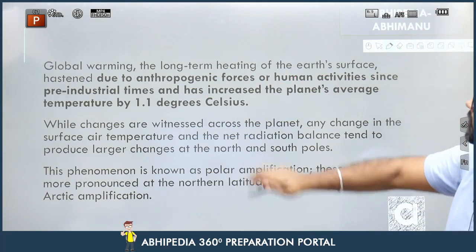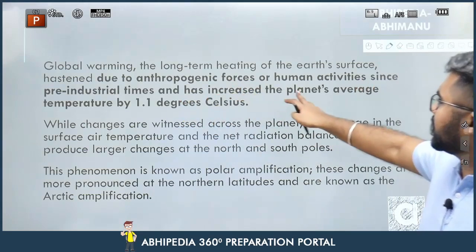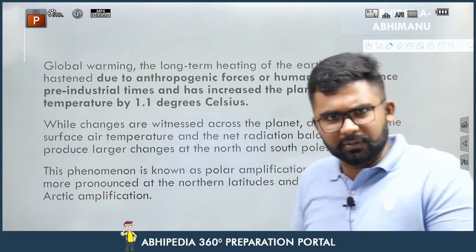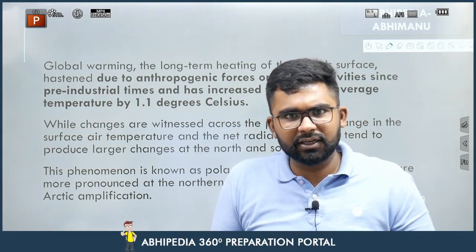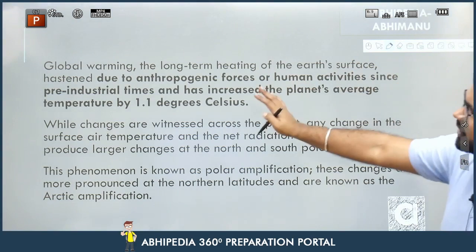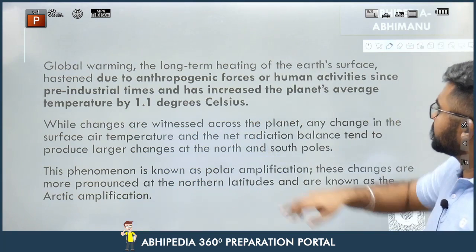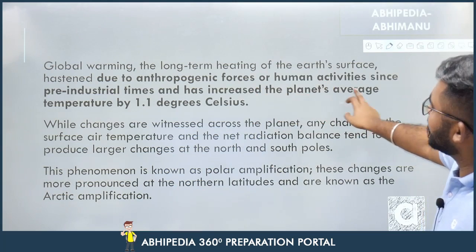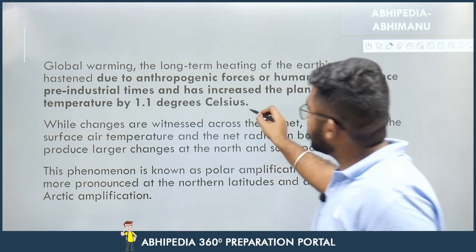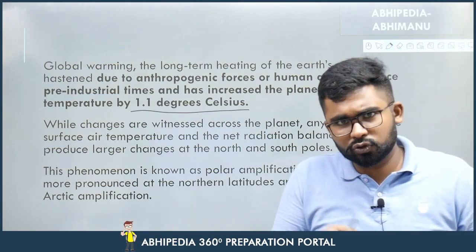Global warming — the long-term heating of Earth's surface — has accelerated due to anthropogenic forces, meaning human interaction and interference. We have released a lot of carbon into the air that was earlier trapped in various forms during pre-industrial times, increasing the planet's average temperature. You can quote this data directly from the institutions mentioned earlier in the video.